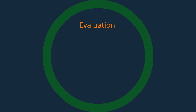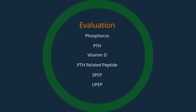The evaluation of the patient with hypercalcemia involves the following tests: phosphorus, parathyroid hormone, vitamin D, PTH-related peptide, serum protein electrophoresis, and urine protein electrophoresis. Phosphorus is very important in determining whether PTH is present and is often low in primary hyperparathyroidism. Vitamin D levels help differentiate milk alkali syndrome and granulomatous disease from other causes. PTH-related peptide is ordered in the setting of paraneoplastic syndrome, and SPEP and UPEP are ordered when one suspects multiple myeloma or paraproteinemia.